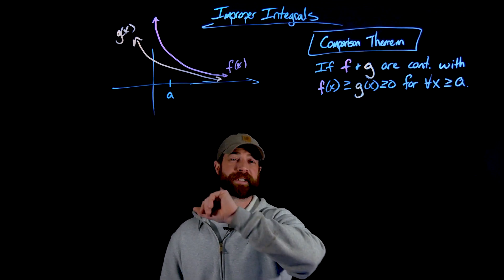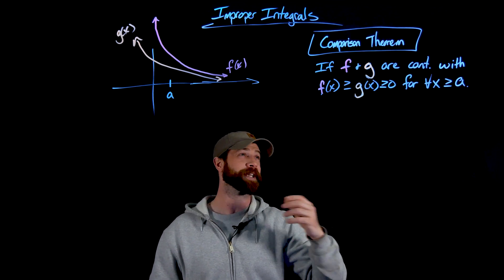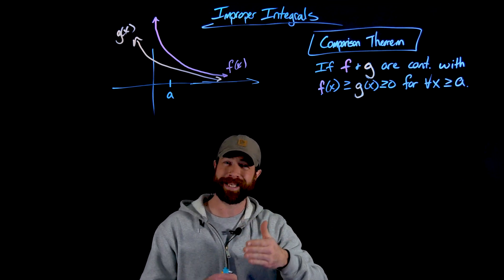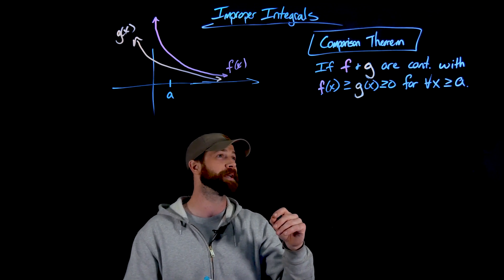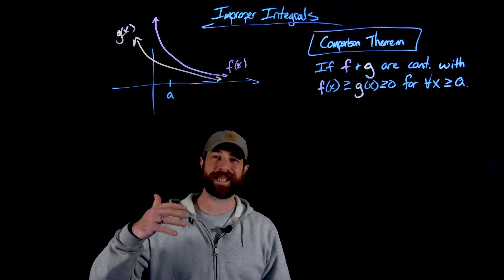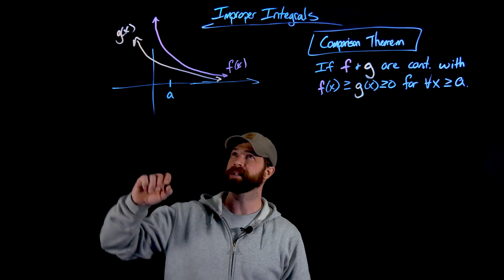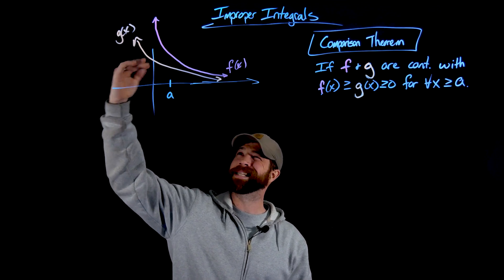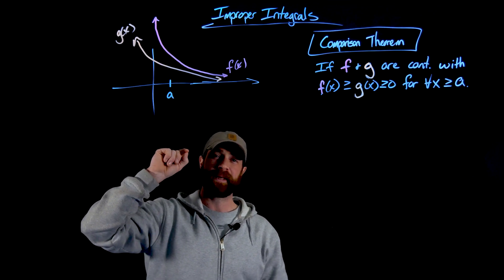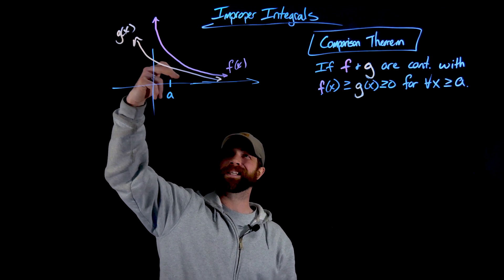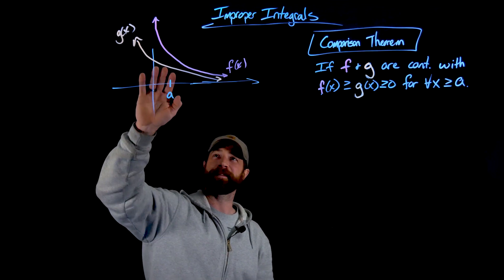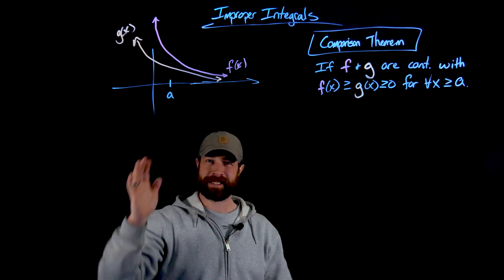The setup uses this graphical setup: f and g are two continuous functions, and importantly f is greater than g of x for all x values for some determined value a. This is a lot like the squeeze theorem from early differential calculus — g is being squeezed as we go to infinity between the function f and zero. Importantly, g can't just be less than f; it also has to be greater than zero. If g dipped below zero it would still be divergent and we couldn't make any statement.